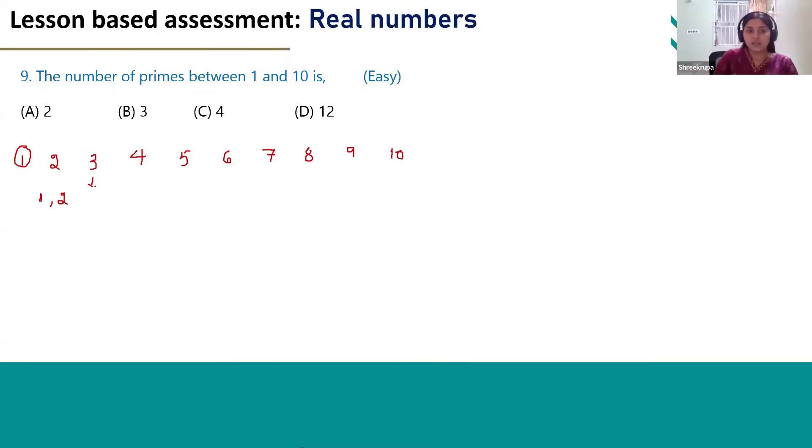Similarly for 3 and 4. 4 can be divided by 1, 2, and the number itself. Here we can see another number as a factor. So 4 cannot be a prime number.